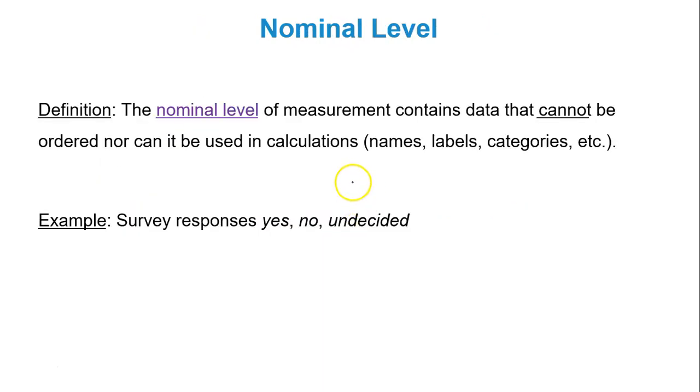Nominal level of measurement contains data that cannot be ordered nor can it be used in calculations. So it's non-numeric. We're talking about names. We're talking about labels. We're talking about categories. We're talking about survey responses of yes, no, or undecided. We're talking about social security numbers. Those are all nominal. They're names, labels, categories.